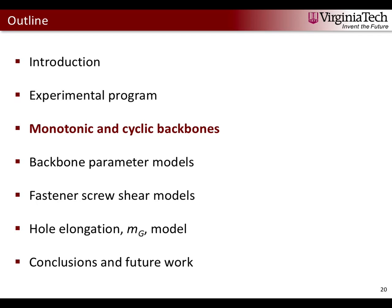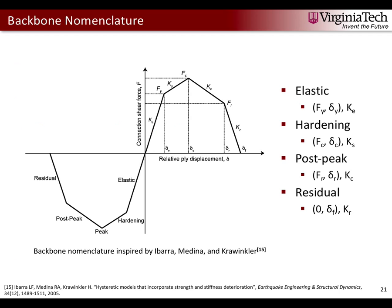Now I'll talk about our monotonic and cyclic backbones. Our backbone nomenclature is inspired by Ibarra, Medina, and Krawinkler. There are five regions: elastic, hardening, peak, post-peak, and residual. There are four main backbone points: the yield point (Fy, δy), peak point (Fc, δc), post-peak residual (FR, δr), and the final point (Ff = 0, δf). We obtain backbones for both monotonic and cyclic loadings.